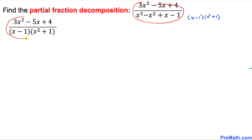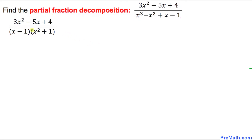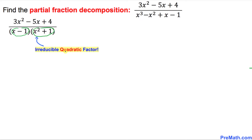Now let's start working on the partial fraction decomposition. As we can see, the first factor in the denominator is indeed linear, and the second factor is an irreducible quadratic factor — that means it cannot be factored further.